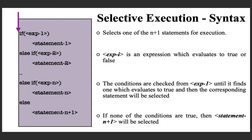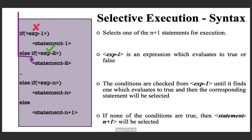Look at an example execution. Suppose the control comes to the if statement and evaluates the first condition, which is false. Because it is false, statement 1 cannot be selected, so you go and evaluate the next condition. Suppose this one evaluates to true — the moment a condition evaluates to true, the corresponding statement is selected for execution. You go inside, execute it, and then exit the if-else-if ladder. The control goes to the statement just after the ladder.